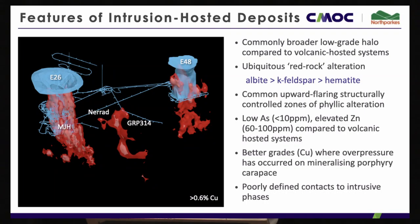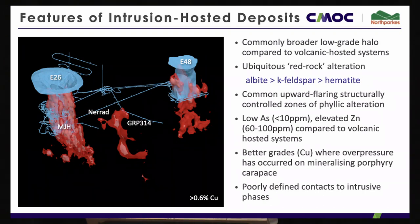Translating this into grade or no grade — what our accountants like — intrusion-hosted deposits generally have a much broader, low-grade halo surrounding the higher-grade core. In a volcanic-hosted system like E26, hypergene copper grade drops rapidly from 1% plus to 0.1% over maybe 100 metres laterally. In a system like GRP or the depths of E26 and MJH, that change happens over several hundred metres — giving you plenty of warning and plenty of clues to get closer, though you can get disheartened drowning in a sea of 0.4%.